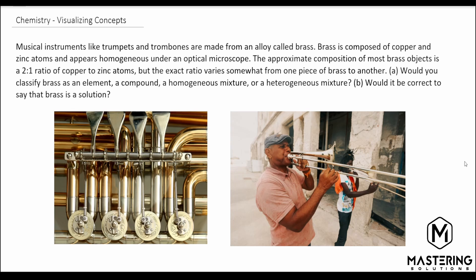In this problem they're asking about an alloy called brass. They say that musical instruments are made out of it — we have some pictures here of a trombone and a trumpet. The approximate composition is roughly two to one of copper to zinc atoms, but it can vary a little bit. There are zinc atoms and copper atoms all mixed together.